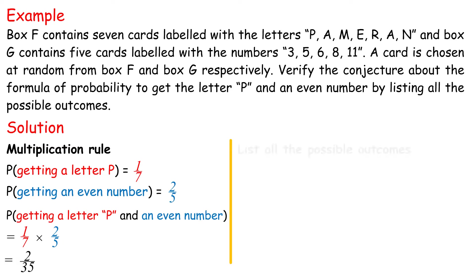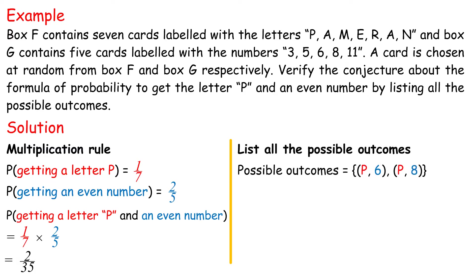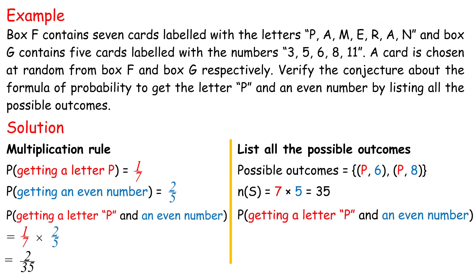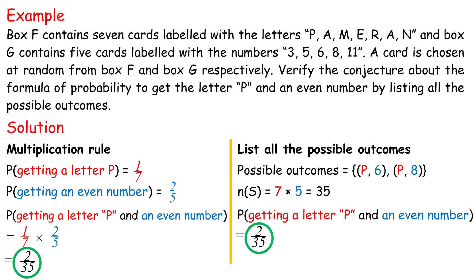List all the possible outcomes: {P6, P8}. n(S) equals 7 times 5 equals 35. P(getting a letter P and an even number) equals 2 over 35. Both methods give the same answer.